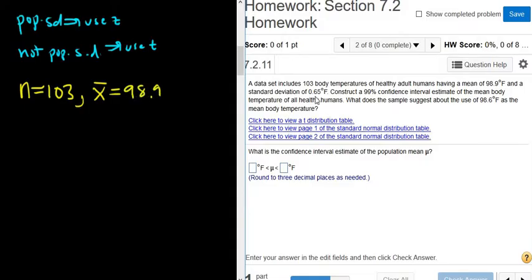And a standard deviation of 0.65. That's going to be the sample standard deviation. The reason it's the sample standard deviation is because it never says population in this sentence. It's talking about this data set of 103 body temperatures. So this is the sample standard deviation. They're not giving us the population standard deviation, so we're going to use t-statistics.